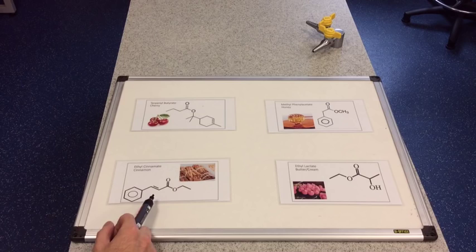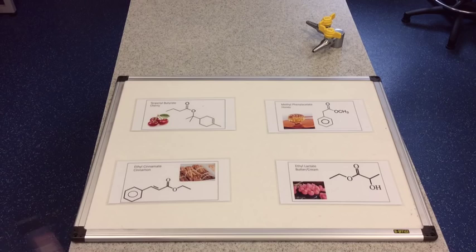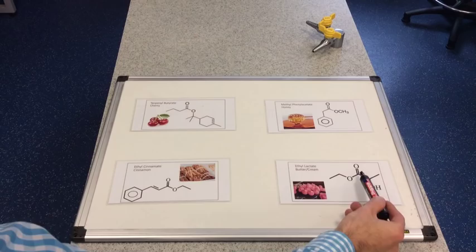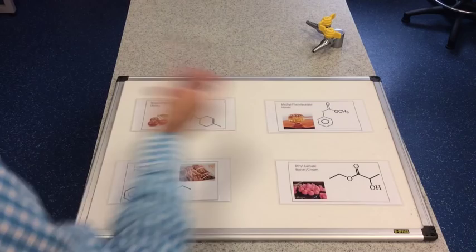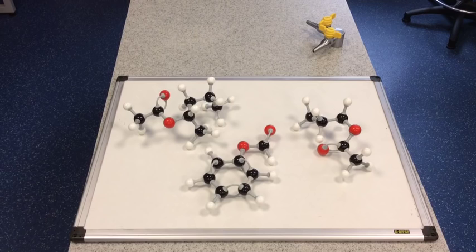We've got one here that's used as a cinnamon flavour. Again, C double bond O, single bond O, R group, R group either side. And this one here, ethyl lactate, is used as sort of a butter, creamy sort of flavour. And again, there's the ester group there. And here's a honey flavouring, this one here. And another use of esters is in their use in soap manufacture. And you'll see this feature in another video about fats and triglycerides. So esters are used as flavourings, and they're also used to make soap.